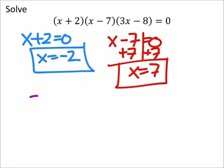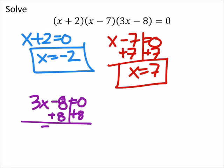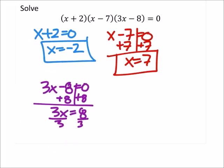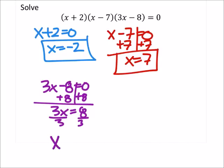Then finally, we've got 3x minus 8. We need this to equal zero. So plus 8 on both sides. And we get 3x equals 8. Let's divide both sides by 3. And that gives us x equals 8 thirds.